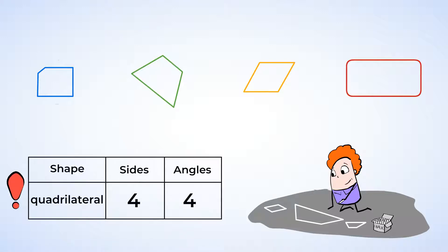The blue shape has 5 sides and 5 angles, so this is not a quadrilateral. The green shape has 4 sides and 4 angles, so this is a quadrilateral. And the yellow shape has 4 sides and 4 angles, so it's a quadrilateral also.